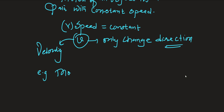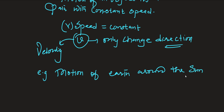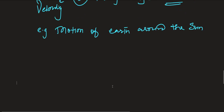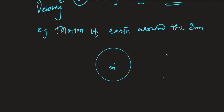For example, motion of the earth around the sun. If the earth is revolving around the sun in a circular path, its speed will be constant. If its speed is constant, it is called uniform circular motion. Suppose this is the center which acts as the sun, and this is the earth which is revolving continuously with certain speed around the sun in a circular track. If the speed of the earth is constant, that motion is called uniform circular motion.